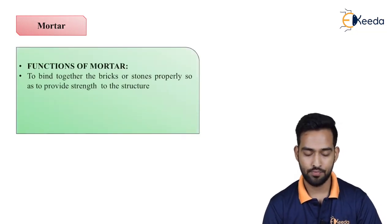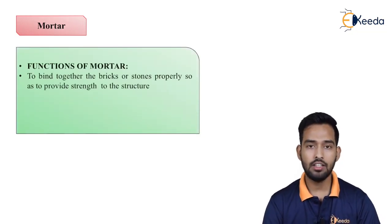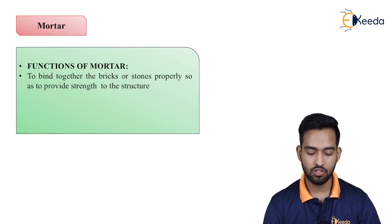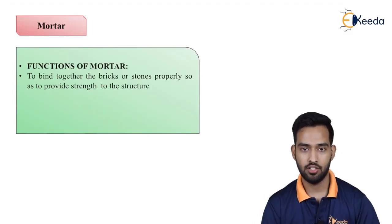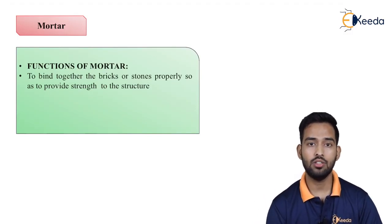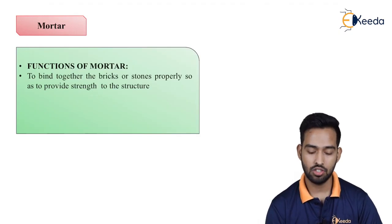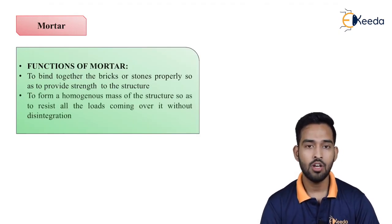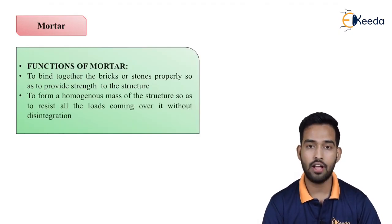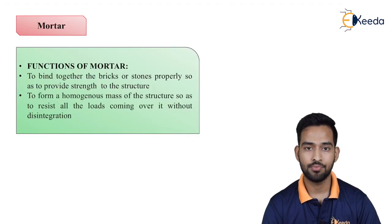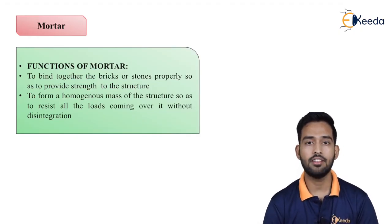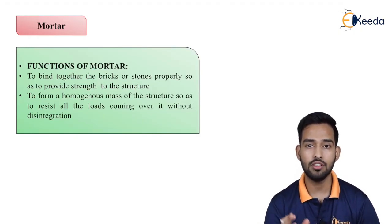What are the functions of mortar? The first function is to bind together the bricks or stones properly so as to provide strength to the structure, so your whole unit will act as one unit. It gives strength to the structure by binding each material. The second function is to form a homogeneous mass of the structure so as to resist all the loads coming over it without disintegration, making the whole mass a homogeneous mass.